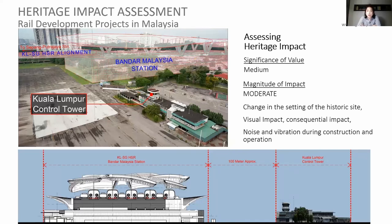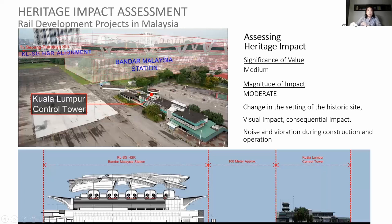Here is an example of how we assess the impact for the control tower — asset number one. This whole high-speed railway development will arrive within 100 meters of the control tower, and the size of the high-speed rail station is just huge and giant. We have to simulate the drawings — we need architects and engineers to study it. HIA is not a one-man study. Comparing the scale of the control tower to the scale of this future development really puts it in perspective.